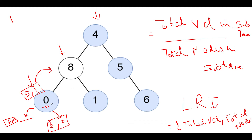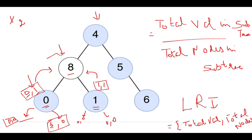We now iterate over the right child of node 8. Similarly, its children return zero and zero. The total here is zero plus zero plus one = one node, sum = 1. One divided by one equals one, which matches the node value, so the total count updates to two, and (1, 1) is returned to the parent. At node 8, the total sum is zero plus one plus eight = nine, and total nodes = one plus one plus one = three. Nine divided by three equals three, which is not equal to eight, so the condition is not met.